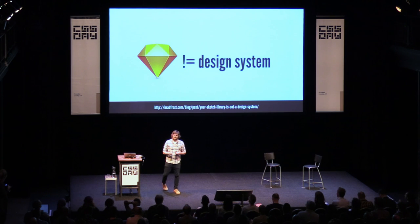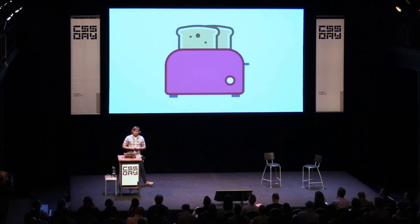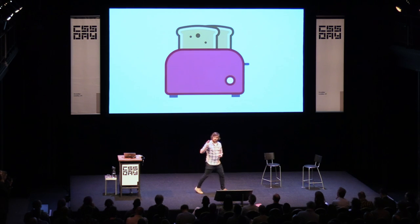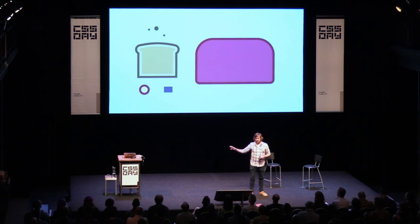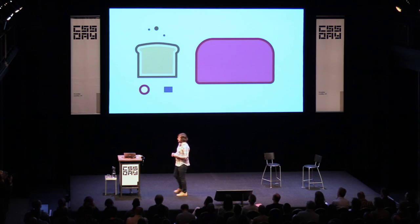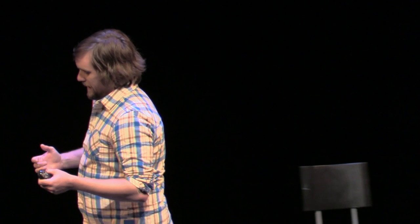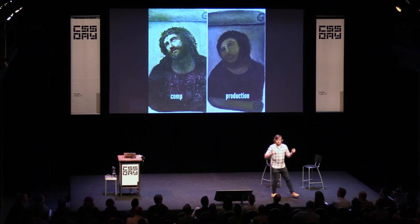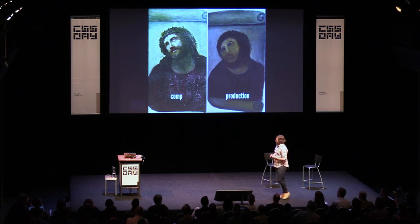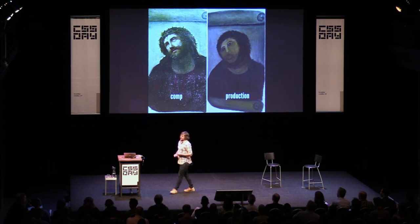A Sketch library is not a design system because you can draw a picture of a toaster. In fact, you could create more efficient ways to draw that picture of a toaster — here's all the component parts. But ultimately at the end of the day, you still just have a picture of a toaster. It will not make you toast. The problem is that this emphasis on static design tools leads to the same problem we've always had, where we go through 18 rounds of design revisions, scooting things around and making everything pixel perfect.